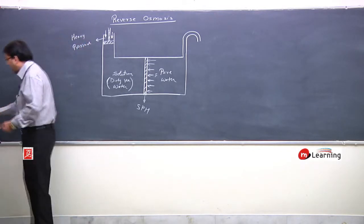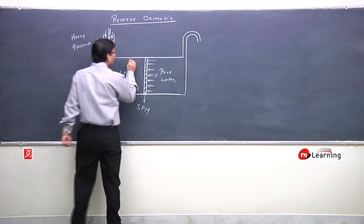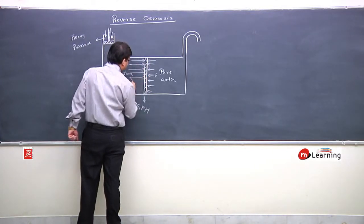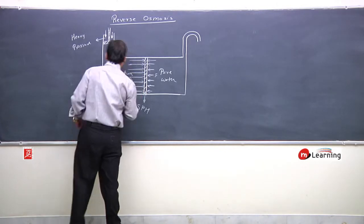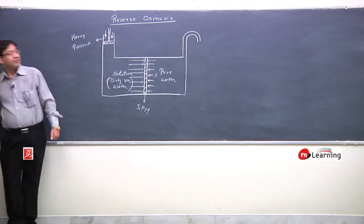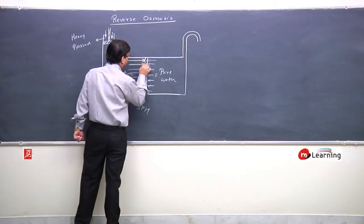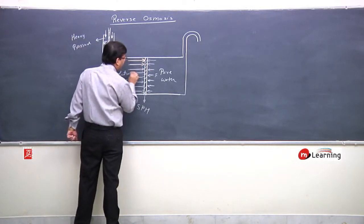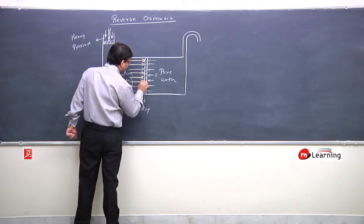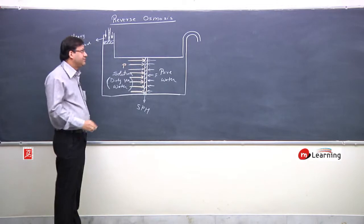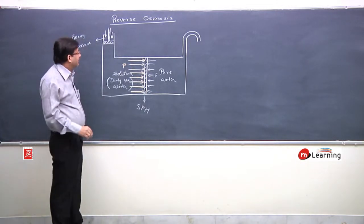Due to this heavy pressure, from the solution side, heavy pressure is applied on the semi-permeable membrane. This is opposite to osmotic pressure. In the opposite direction of osmotic pressure, from an external agent, heavy pressure is applied.